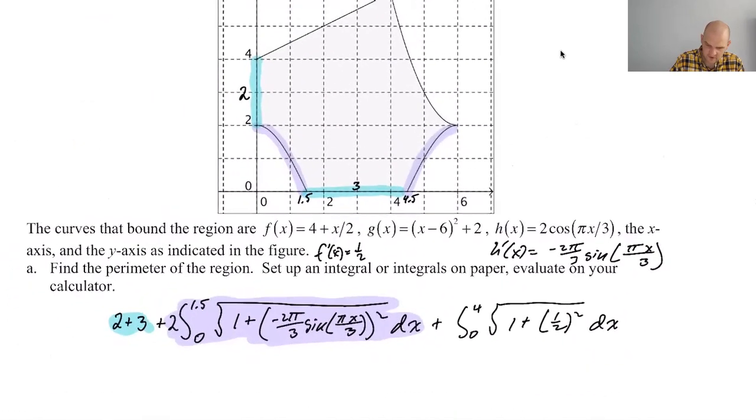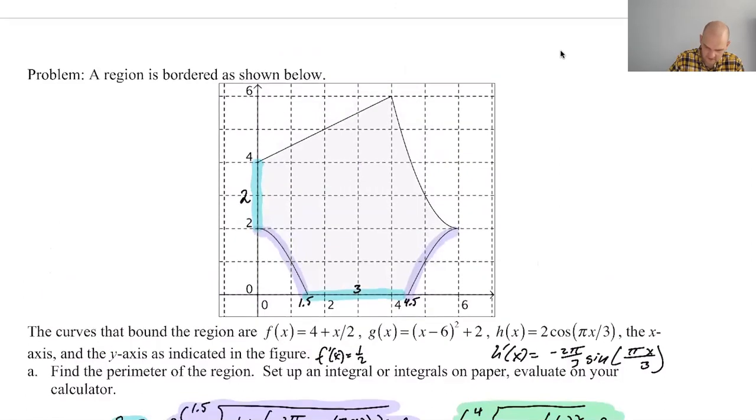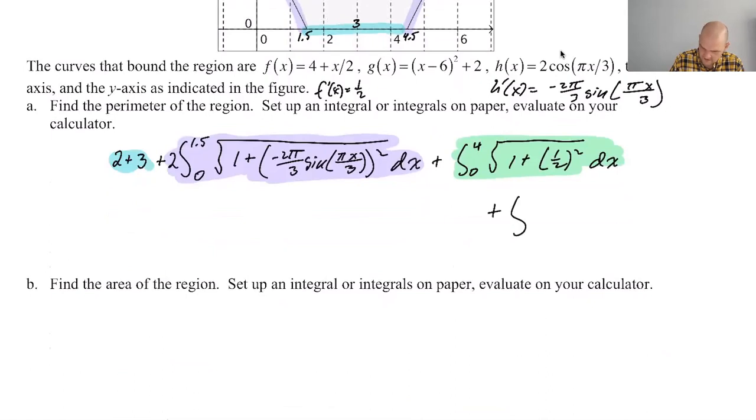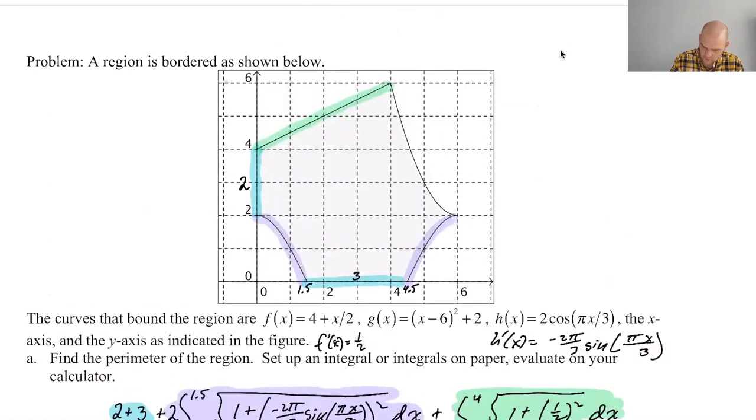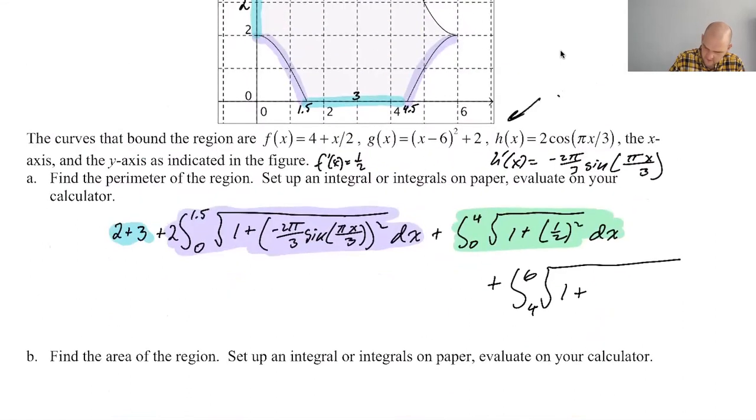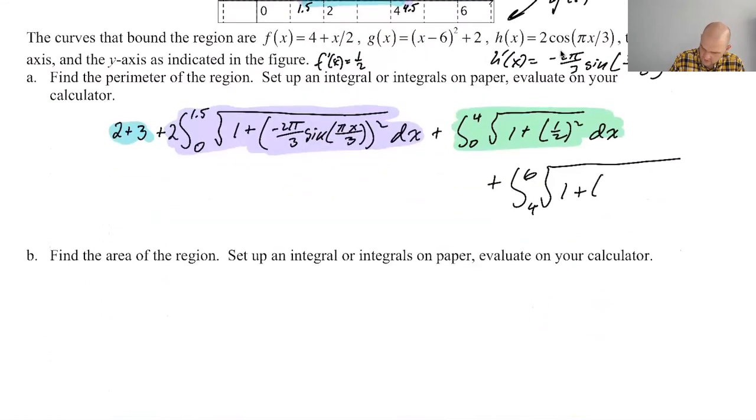And then we need that one last part. Maybe I'm just not being aggressive enough with my highlighting. So it's taking longer. And then we got to add plus the integral from four to six of the square root of one plus, G prime is just two times the quantity X minus six. So the quantity two times X minus six squared DX. And then there we go.